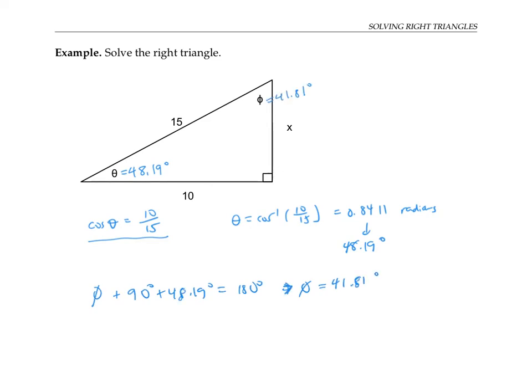Finally, we can find x either using a trig function or by using the Pythagorean theorem. To find it using a trig function, we could write down something like tan of 48.19 degrees is x over 10. To find it using Pythagorean theorem, we'd write down 10 squared plus x squared equals 15 squared. I'll use the Pythagorean theorem and find that x equals the square root of 15 squared minus 10 squared. That gives me an answer of 11.18.